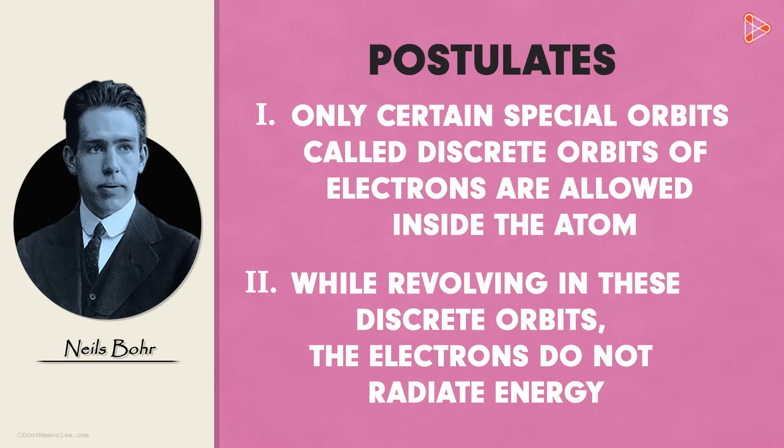But what exactly are these paths or orbits in which the electrons revolve around the nucleus? Let's understand with an example.